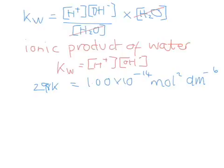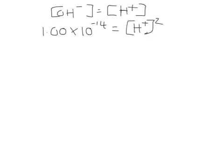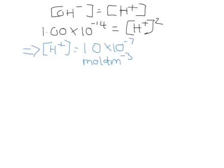For each molecule of water that dissociates, it gives 1 hydrogen ion and 1 hydroxide ion. So in pure water at 298 K, we can say the concentration of the hydroxide ion is equal to the concentration of the hydrogen ion. Therefore KW, or 1 × 10⁻¹⁴, is equal to the concentration of the hydrogen ion squared, giving a hydrogen ion concentration of 1 × 10⁻⁷ mol dm⁻³.